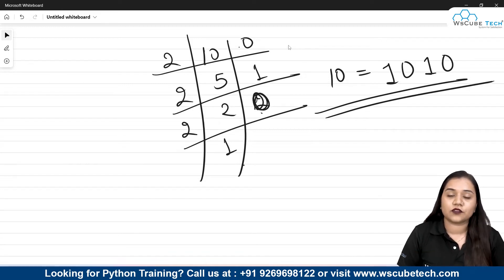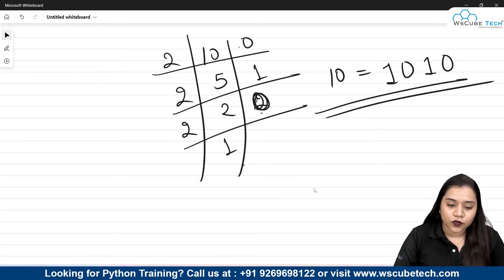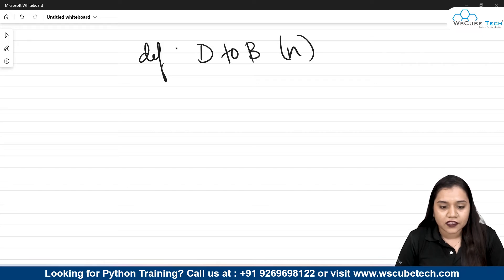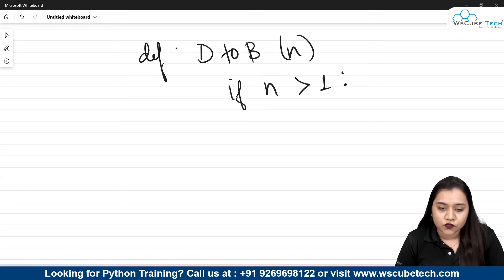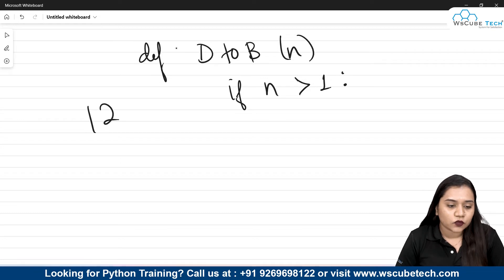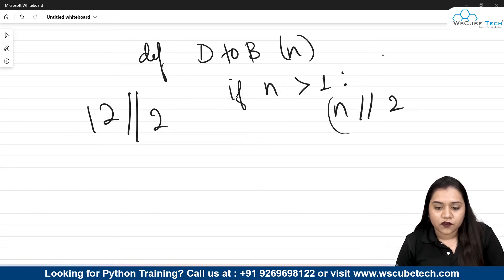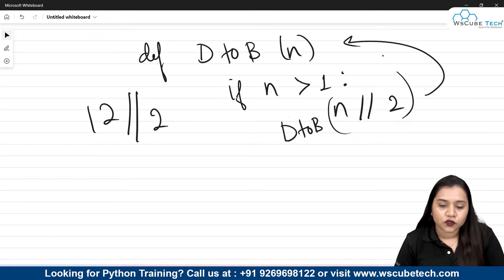Now, what if we want to do this in Python? We have a simple method. We create a function — def d_to_b — and pass a variable n. Inside, if n is greater than 1, we perform floor division by 2 to get the quotient: n floor-division 2, and put it inside d_to_b. This calls the function over and over again until the value is less than 1.